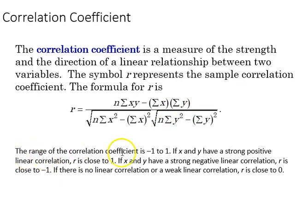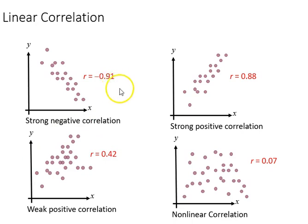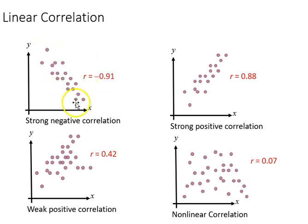The range goes from negative 1, which is a perfect negative relationship, all the way up to positive 1, which is a perfect positive relationship. A 0 would represent no relationship at all. As we get close to those limits of 1 and negative 1, the strength is said to increase. A negative 0.91 correlation is a very strong negative correlation as it gets close to minus 1.